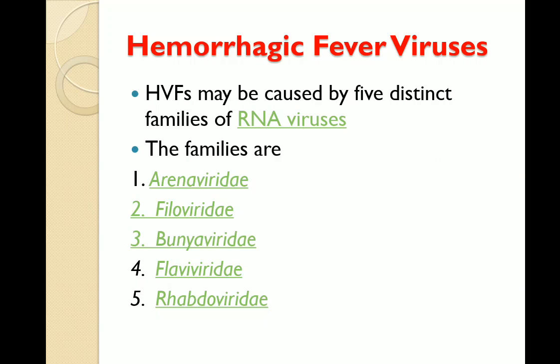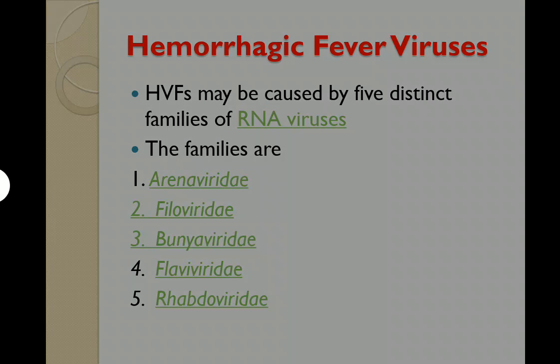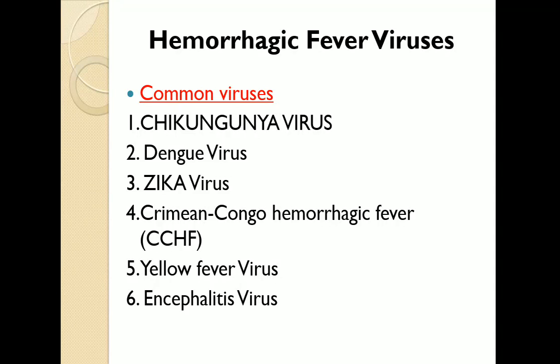These are the families of RNA viruses that cause hemorrhagic fever. They include Arenaviridae, Filoviridae, Phenuiviridae, Hantaviridae, Nairoviridae, Flaviviridae, Rhabdoviridae, and others. Common viruses are those which occur most frequently, with higher chances of occurrence compared to uncommon viruses.